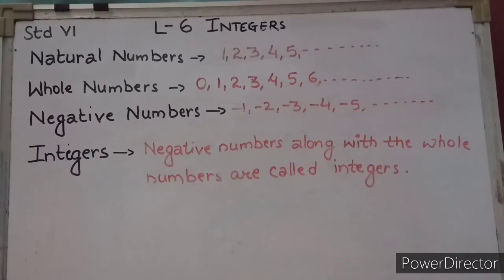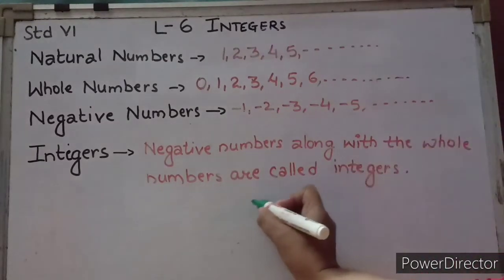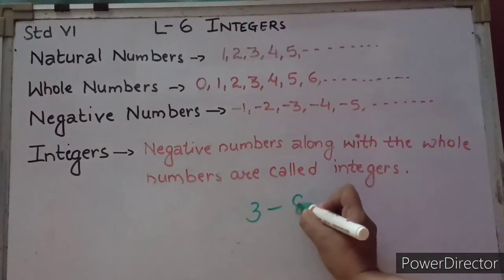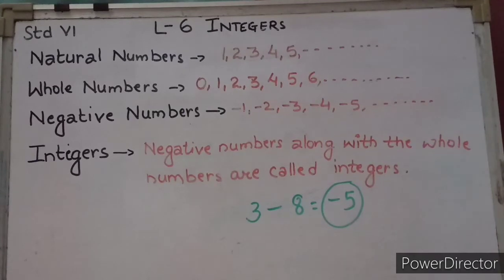All natural numbers are whole numbers. 1 is the smallest natural number and 0 is the smallest whole number. When we add two whole numbers, we get another whole number. For example, 1 plus 2 equals 3, and 16 plus 2 equals 18, both whole numbers. But this is not the case with subtraction. If I subtract 3 minus 8, it equals minus 5, which is a negative number. Numbers less than 0 — minus 1, minus 2, minus 3, minus 4, minus 5 and so on — are negative numbers.